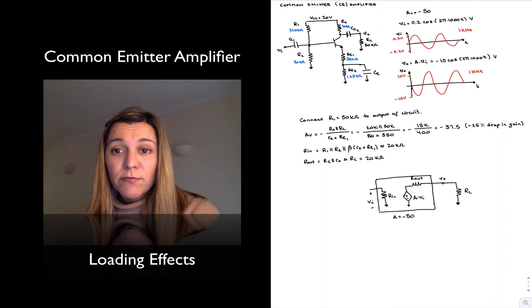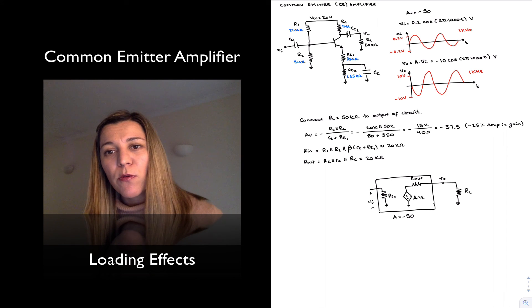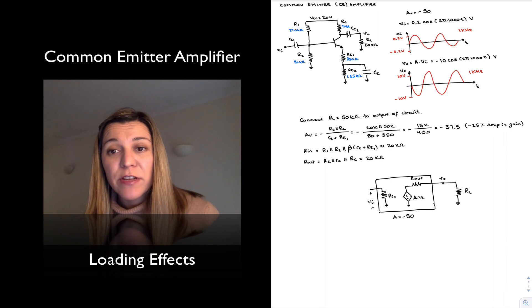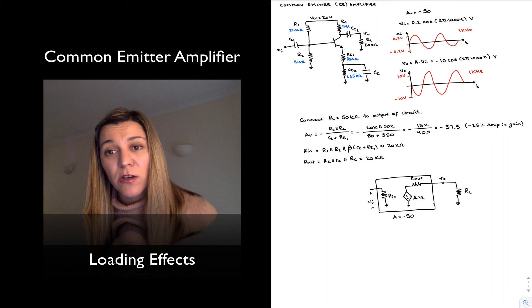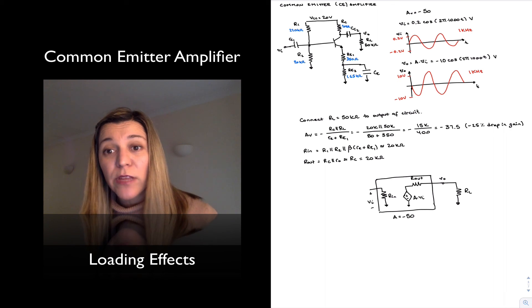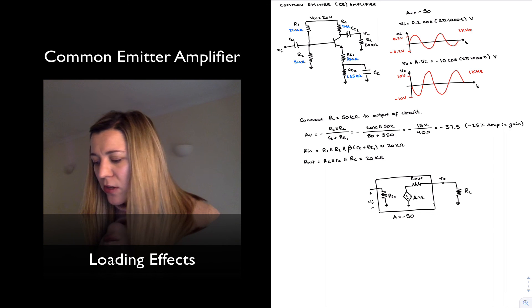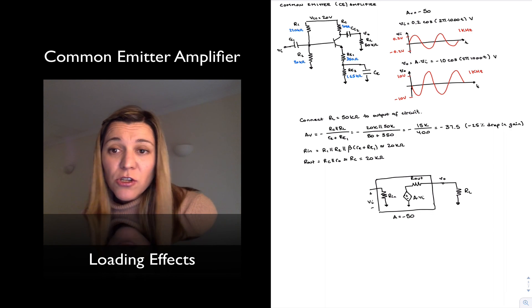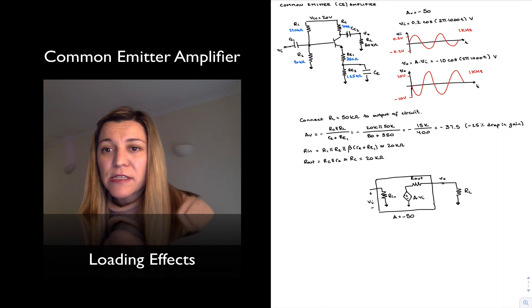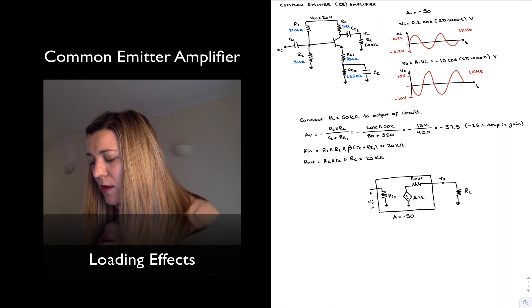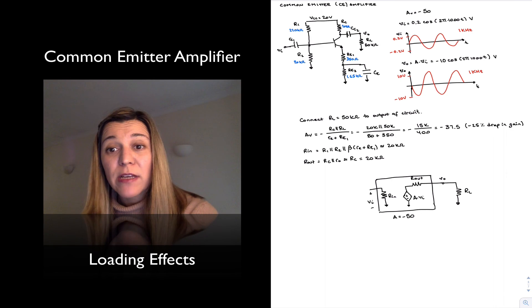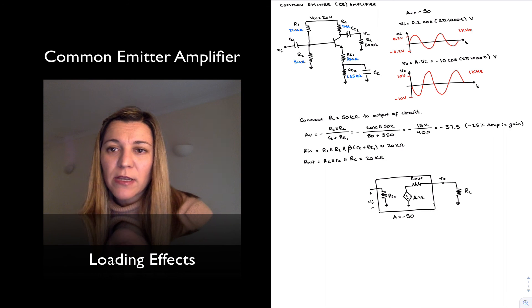In a good voltage amplifier, typically we want to make the output resistance very small, precisely because of that, so that we can connect reasonable sizes of load resistances without loading the amplifier. But we can see that 50K is not a small value for a load resistance, it's a fairly reasonable value. But even that value provides substantial loading to a common emitter amplifier.